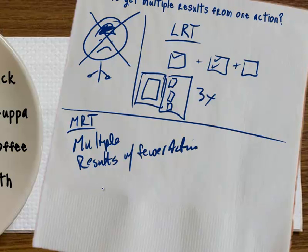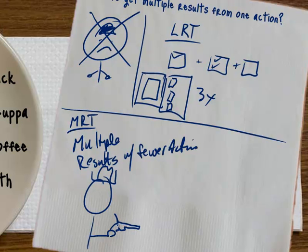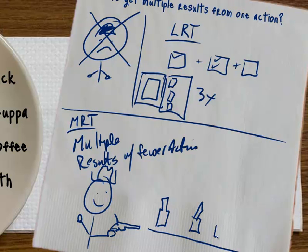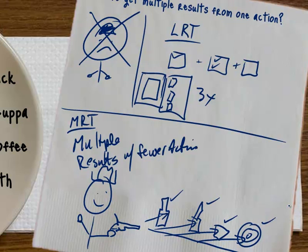I want you to think about a cowboy who's in a shooting competition. He's shooting at bottles, cans, and targets, and each time he shoots he accomplishes one thing — takes out the bottle, takes out another bottle, takes out the can, hits the target. This right here is the equivalent of linear results tasking: lining up your bottles and shooting them one at a time.